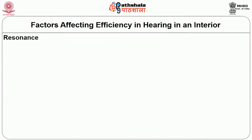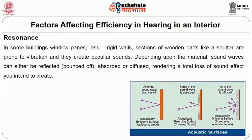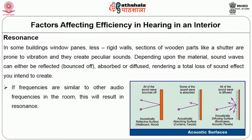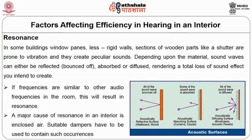The fourth factor is resonance. In some buildings, window panes, less rigid wall sections, and wooden parts like shutters are prone to vibration and create peculiar sounds. Depending upon the material, sound waves can either be reflected, absorbed, or diffused, rendering a total loss of the sound effect you intend to create. If frequencies are similar to other audio frequencies in the room, this will result in resonance. A major cause of resonance in an interior is enclosed air. Suitable dampers have to be used to contain such occurrences.